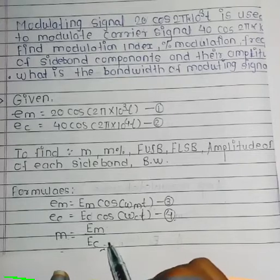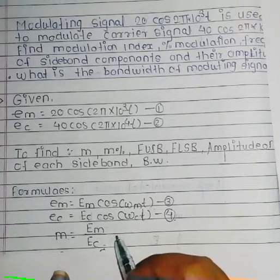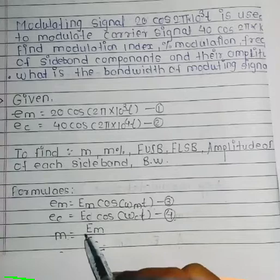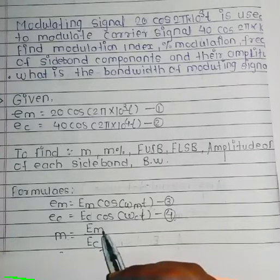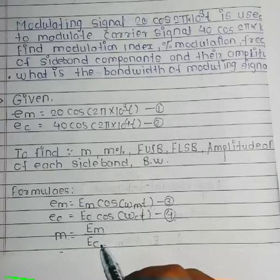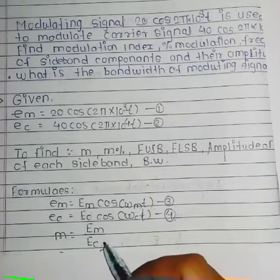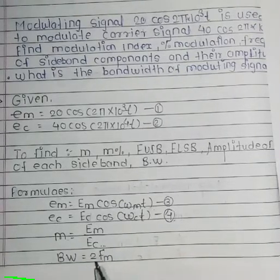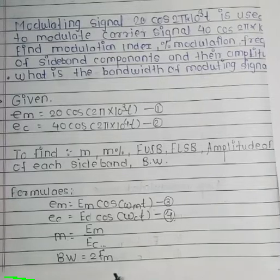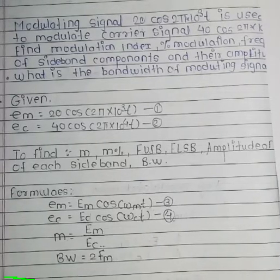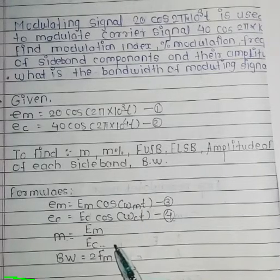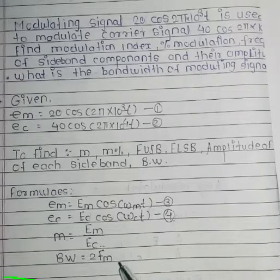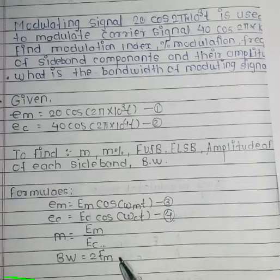The formula for modulation index is M = Em / Ec — this is a very important formula. Modulation index is defined as the ratio of modulating signal amplitude to carrier signal amplitude. The bandwidth formula is twice FM, i.e., BW = 2·FM.